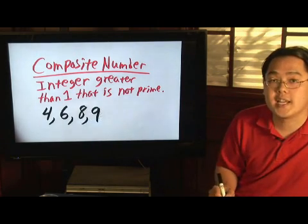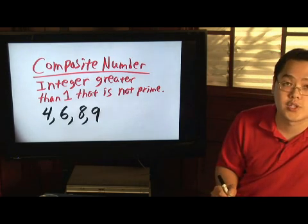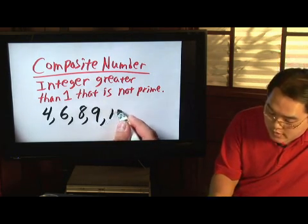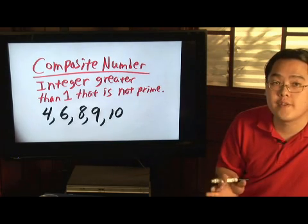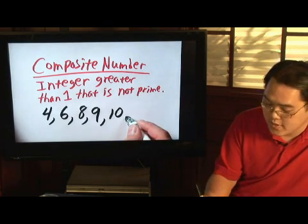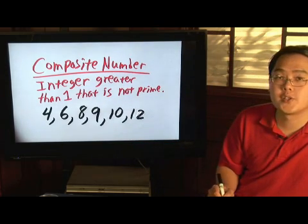You can definitely say nine is a composite number as well because besides one and nine, three goes into nine as well. Ten, besides one and ten, two and five go into ten. Eleven is a prime, but twelve is also composite.